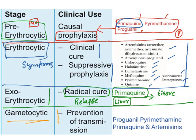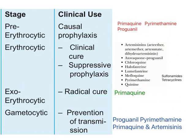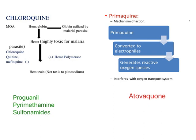The gametocytes can also be killed to prevent transmission of malaria. The drugs used for gametocidal action are three P's: proguanil, pyrimethamine, primaquine, and artemisinins. This is the classification of anti-malarial drugs based on the life cycle stages. Now let us look at the mechanism of action of each group.